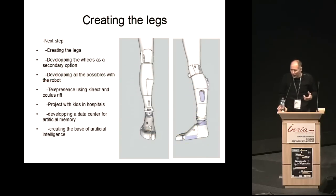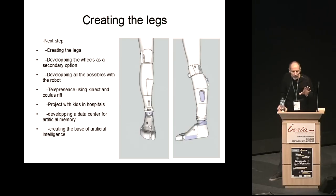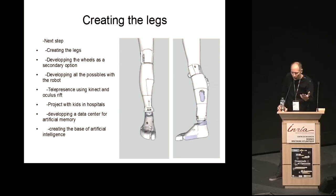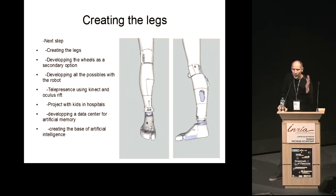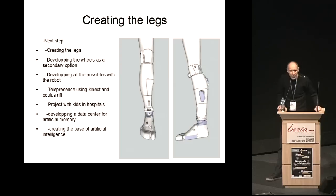The next step was mobility. From my point of view, the simplest thing was to print a Segway-style base — print the wheels, print the parts, put motors on it. But the community said no, they want legs. So I thought, okay, I'm going to design legs and work on the mechanism. But using servo motors for legs is not currently possible.